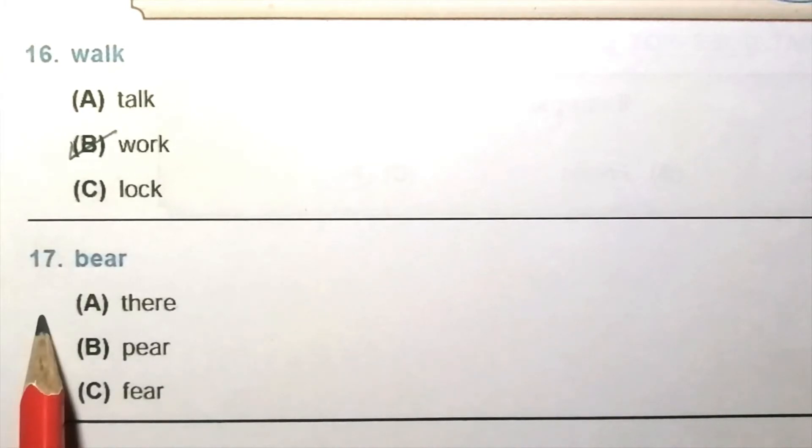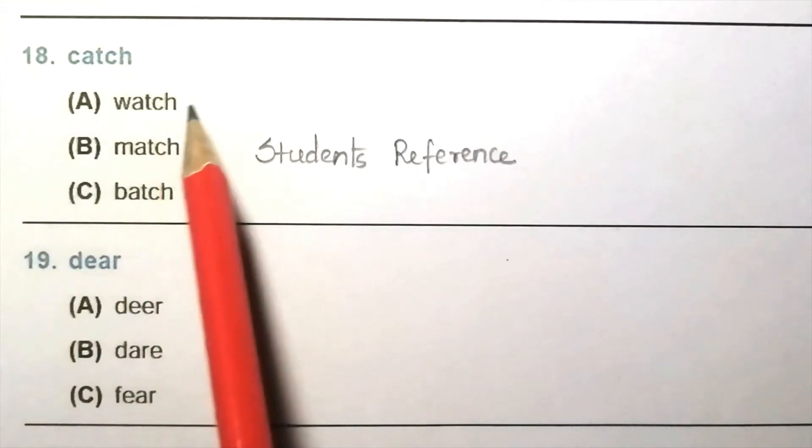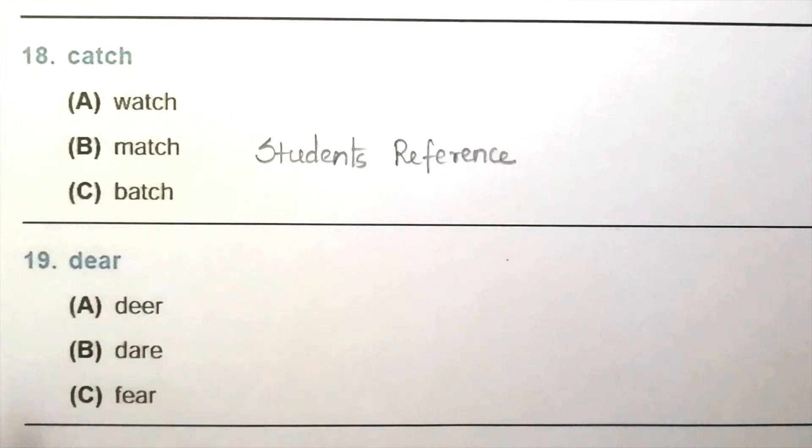Question 17: Beer, dare, peer, fear. The answer is C, fear. Question 18: Catch. Watch, match, batch. The answer is A, watch.